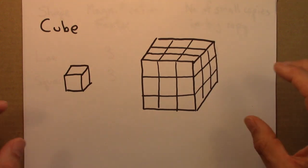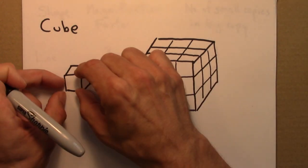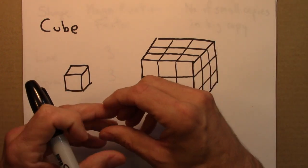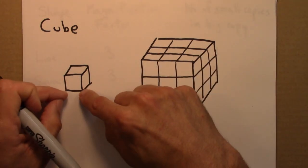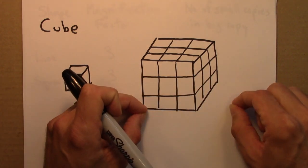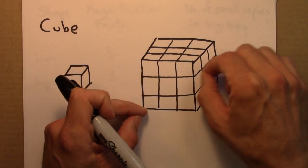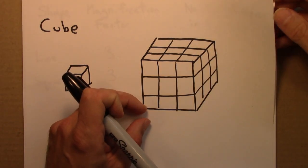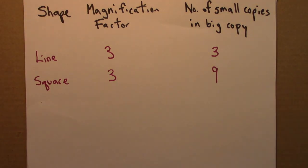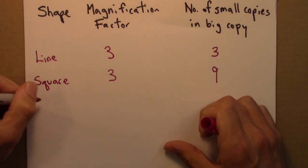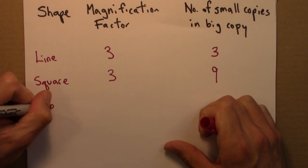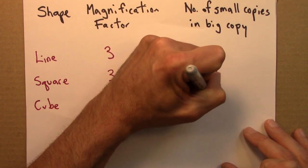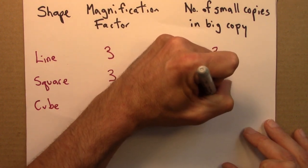And the magnification factor again is three. To go from this small cube or this small cube here to the big one, I need to magnify the entire shape by three. Meaning that it's three times as long, three times as deep, and three times as high. So I can complete this table now. So the last shape is a cube. The magnification factor is three. And the number of small copies in the big copy is 27.